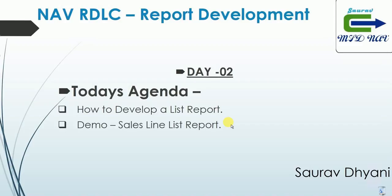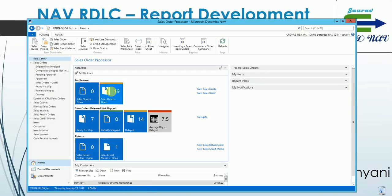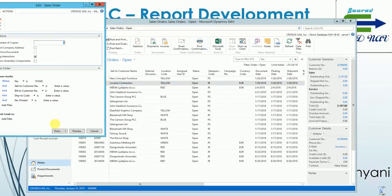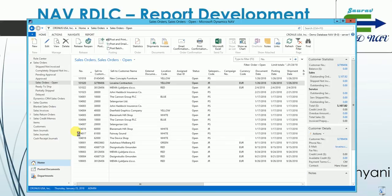We have deviated a bit from the original agenda, and now I think we should start developing a document report — let's say a sales order report. While covering the development of that particular report we'll cover most of the parts required for report development. So let's try to build a report for the sales order.